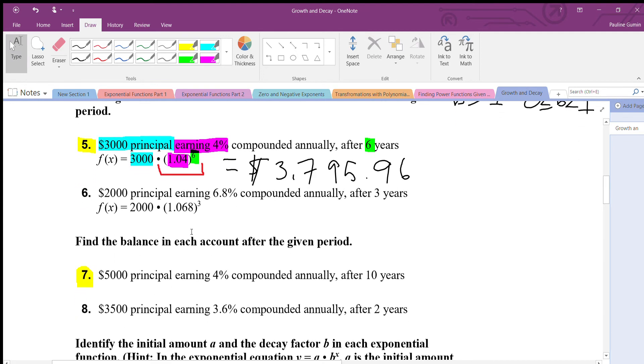Number seven is giving us a principal earning percentage and how many years but no equation, so let's write our own equation. f of x, we have a five thousand dollar principal, times an earning of four percent. So four percent is 0.04. Since we're earning it, it's going to be 1.04 because it's a hundred percent and four percent, we want it to get larger. And lastly we have the time, ten years, so my ten is going to be this exponent.